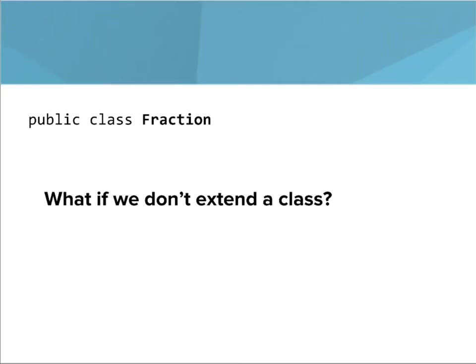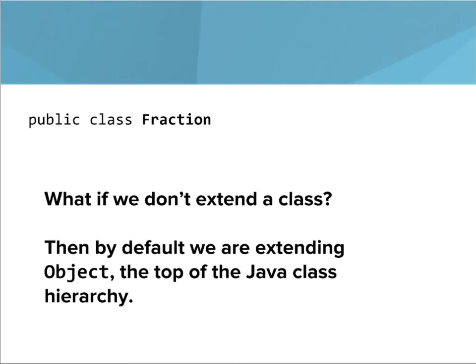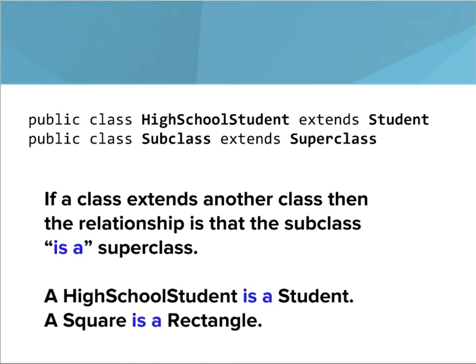What if we have something like `public class Fraction` and we don't use the `extends` keyword? By default we're extending Object, which is the top of the Java class hierarchy. And there's a specific way that we talk about the relationship: if a class extends another class, the relationship is called an 'is a' relationship. We can say a high school student is a student, or a square is a rectangle, or a rectangle is a shape. That's the relationship between the subclass and the superclass.